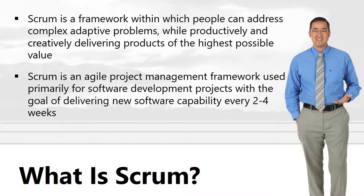The other useful definition is regarding agile management: Scrum is an agile project management framework used primarily for software development projects, with the goal of delivering new software capability every two to four weeks. In agile we deliver chunks in different iterations, collaborating with internal teams, external teams, and the customer — which is why Scrum fits perfectly within the agile project management framework.